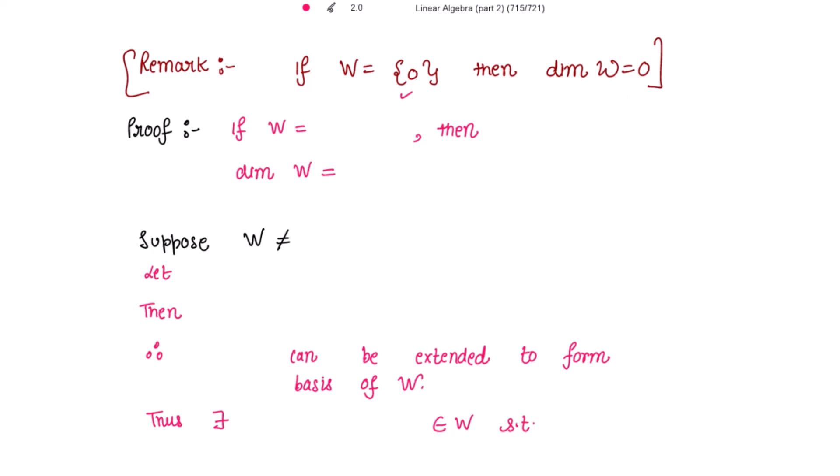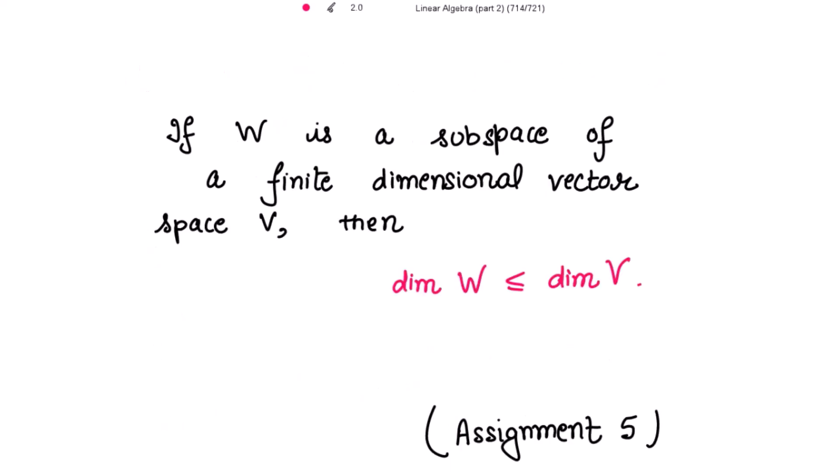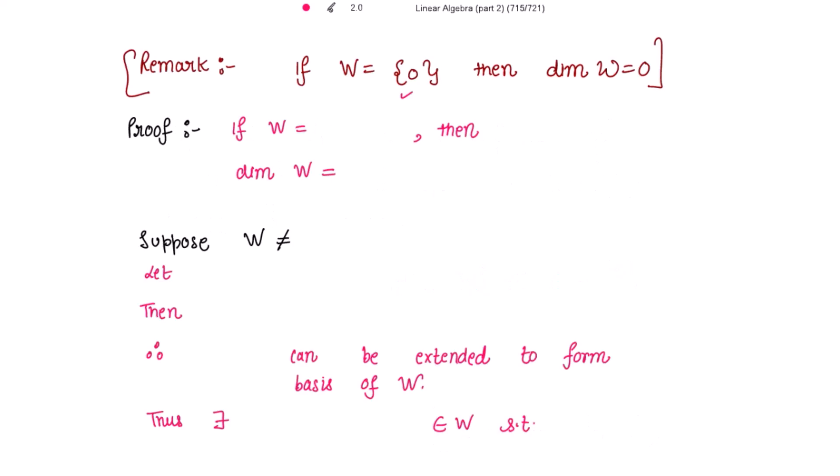Now the proof. What is given to us: W is a subspace of a finite dimensional vector space V. We have a vector space that is finite dimensional and W is a subspace of that vector space. We have to prove that dimension of W is less than or equal to dimension of V.